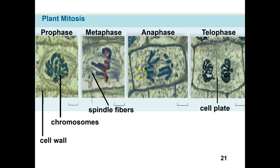In anaphase, the chromosomes are splitting — sister chromatids of each chromosome split so that we have one half of the chromosomes on one side and one half on the other. Then in telophase, a new nuclear envelope wraps around the chromosomes and cytokinesis occurs.